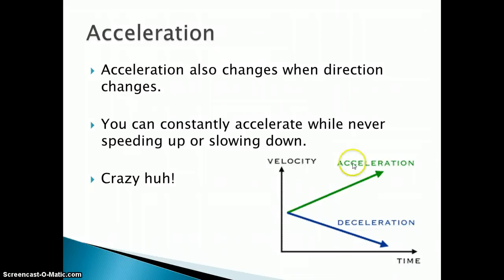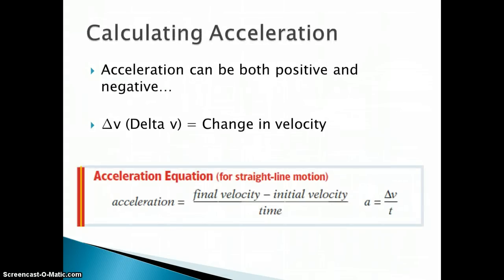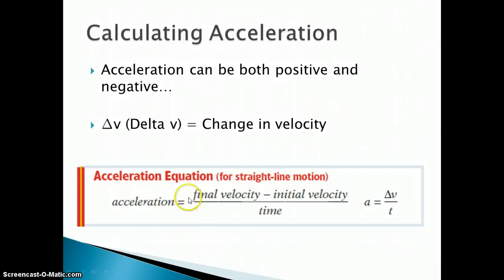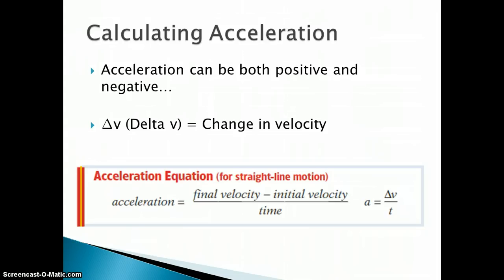I just want to go back and talk about acceleration and deceleration. These are terms we use just so we have an idea — we use acceleration to mean positive and deceleration to mean a negative or slowing down. But acceleration is actually any change. We can calculate acceleration using this equation: acceleration equals final velocity minus initial velocity over time. Any time we're looking at the change in velocity, we use the Greek symbol delta, so delta V equals final velocity minus initial velocity. Acceleration is the change in velocity over time, and we use this equation for any straight-line motion.